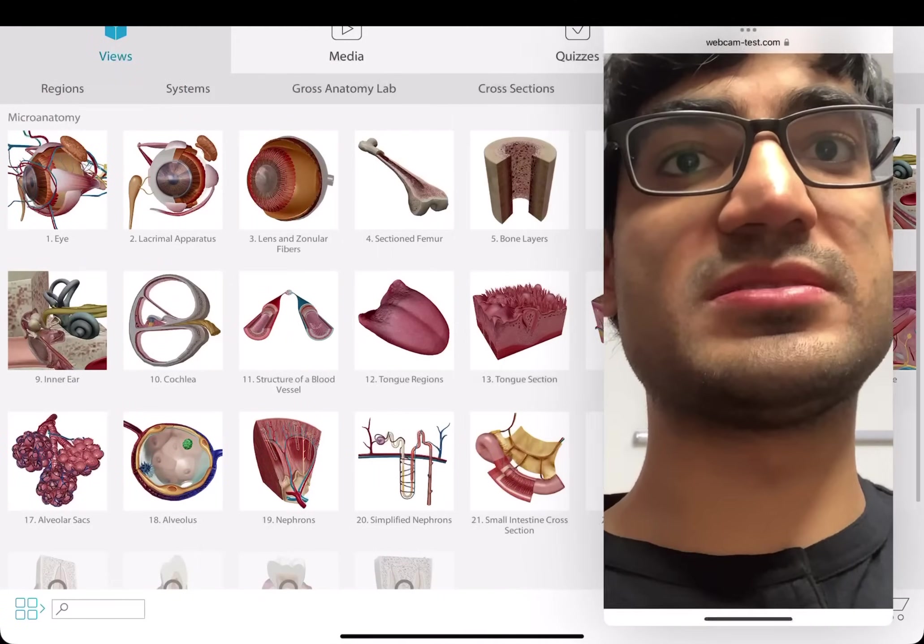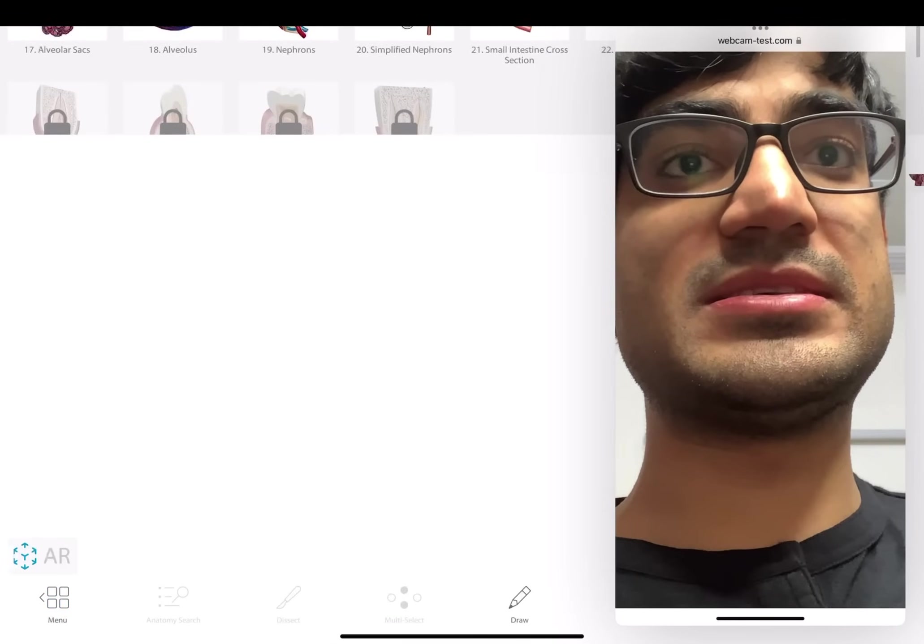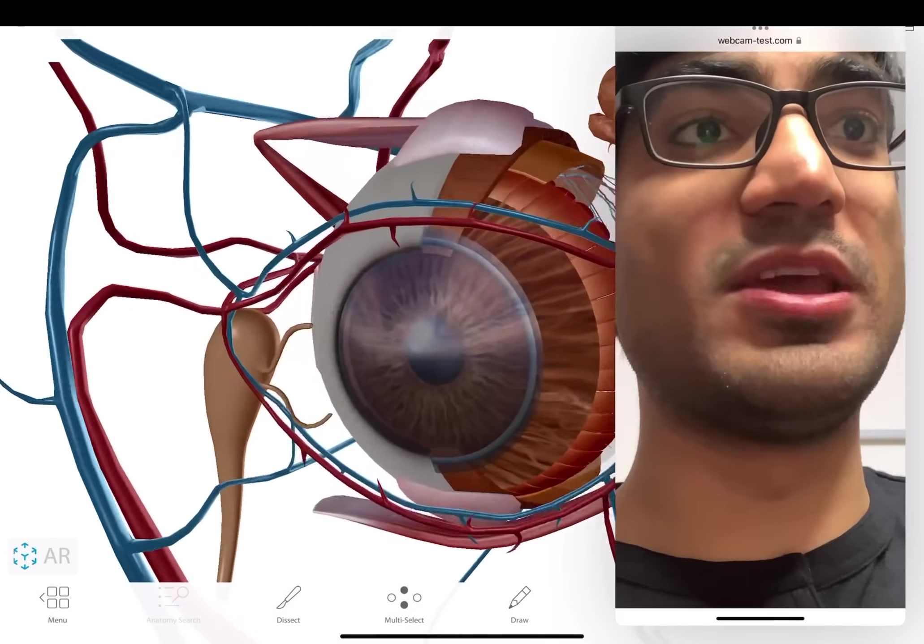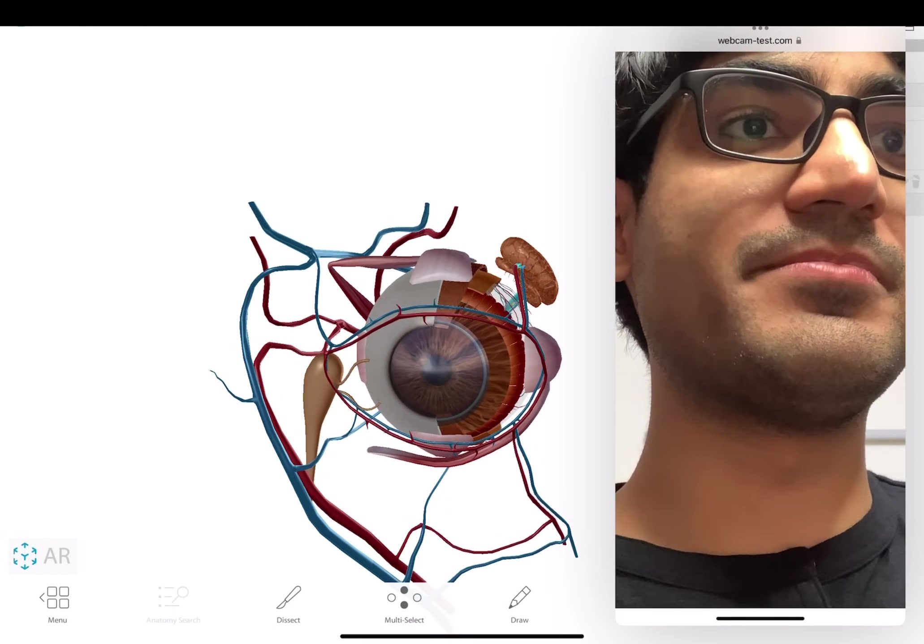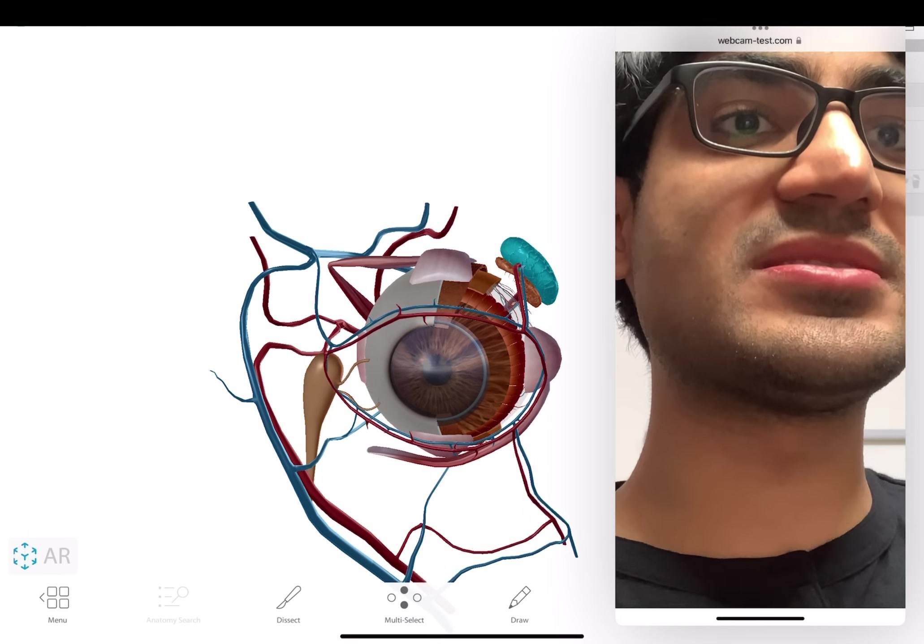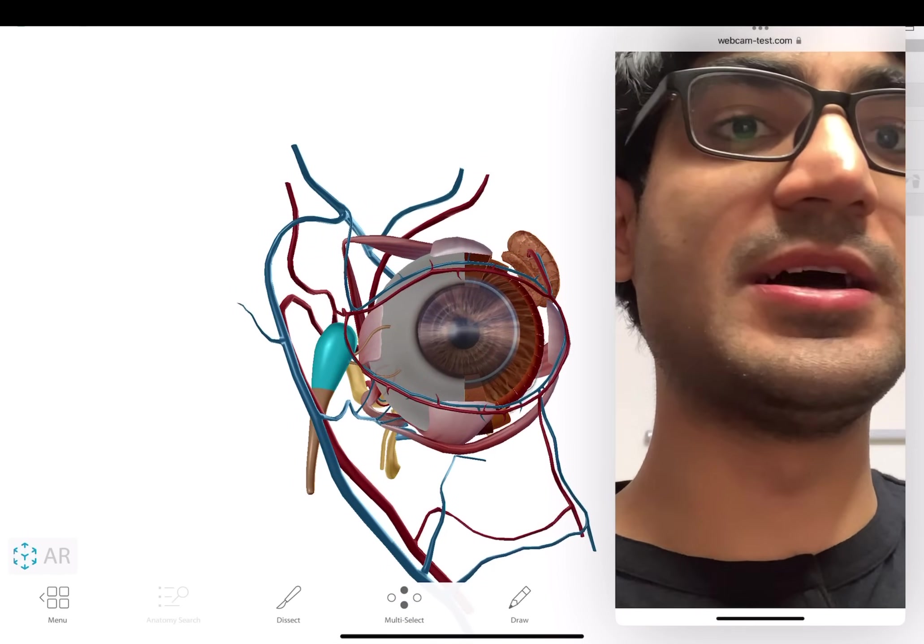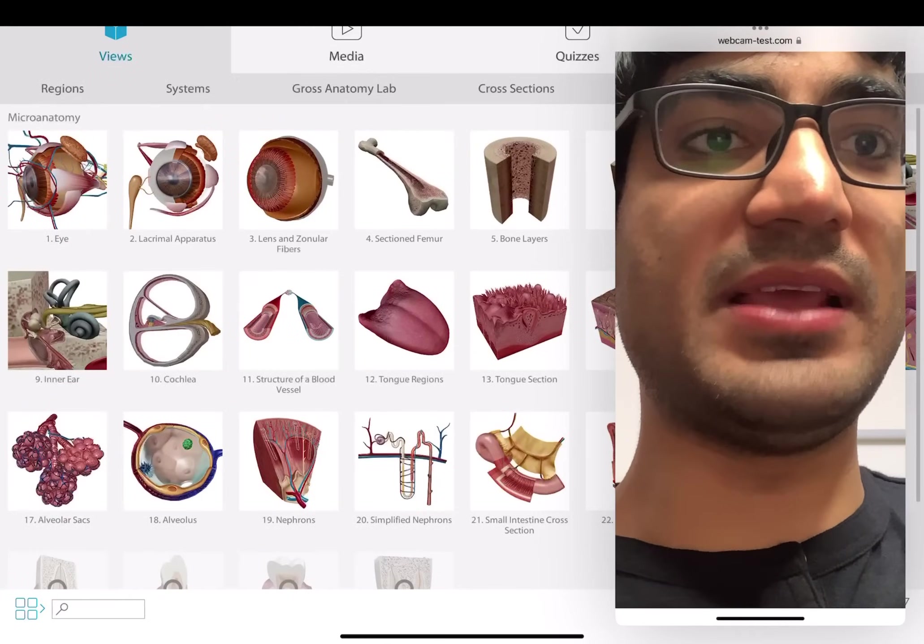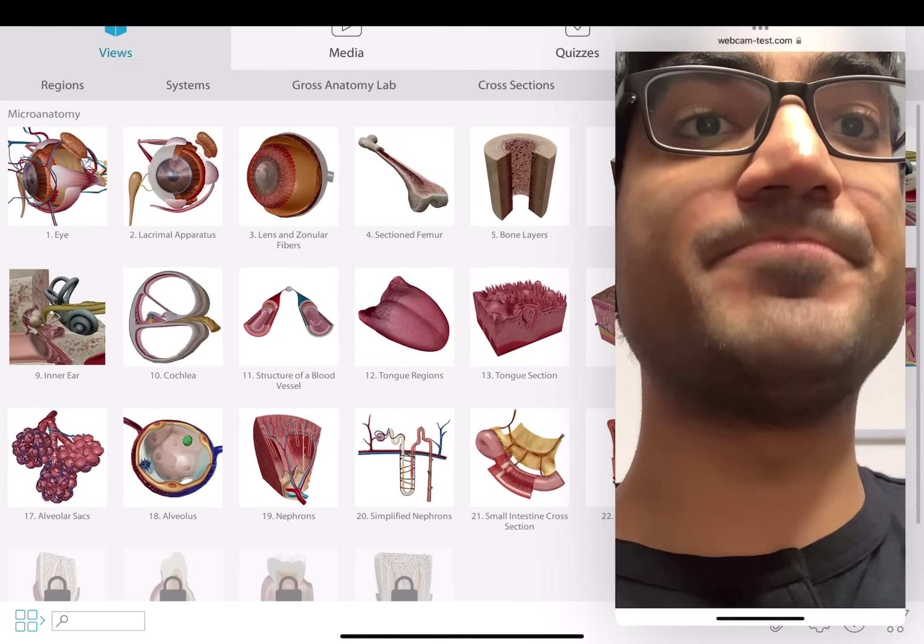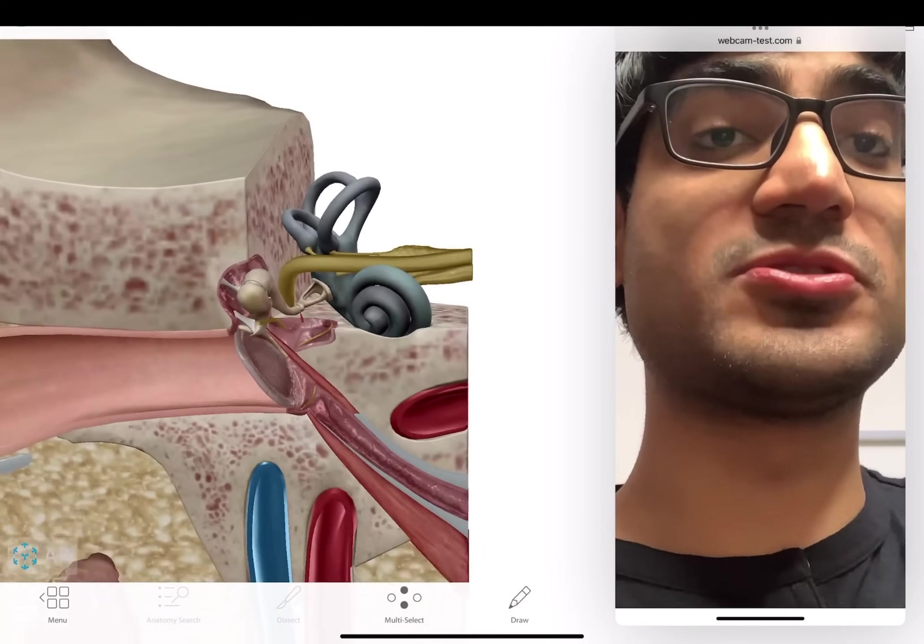There's another part that I really like about it. That's microanatomy. So you can see the eye. This is beautiful. Look at that. The whole eye. And you can see that the lacrimal glands. You can see that this is the duct, the lacrimal duct. So very helpful. So you can see microanatomy and even there are views for the alveoli, the inner ear, which is so helpful.